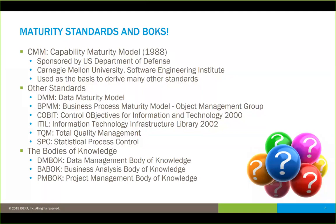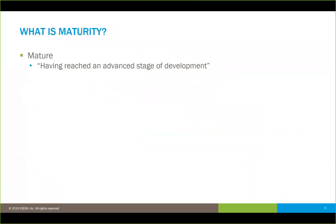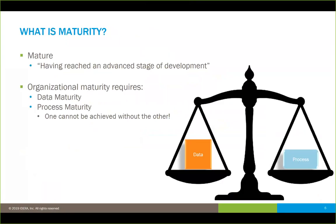What I'm really trying to drive at here is we have a lot of standards and bodies of knowledge that we can bring to bear in our own organizations, so we can start to elevate our maturity in how we're dealing with not only data, but also process. To take a step back, let's look at what maturity overall means. A very simple definition is being mature means having reached an advanced stage of development — which implies growth. We're starting at one point and moving to another. Organizational maturity overall requires what I call the balanced approach: you need to have a balance between data maturity and process maturity. You cannot achieve one without the other — it's virtually impossible.